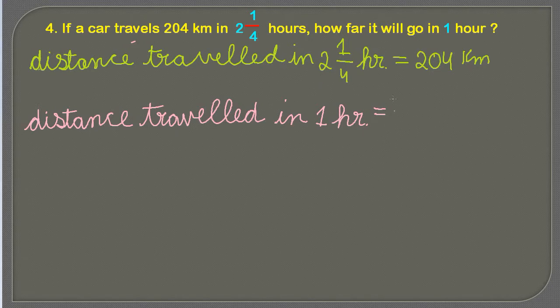Now, as we are going to divide, we have guessed it - we are dividing 2¼ from both sides. So we get 2¼ divided by 2¼ as 1. To compensate, we are going to divide 204 by the same amount, that is 2¼, so that we get distance traveled in 1 hour.